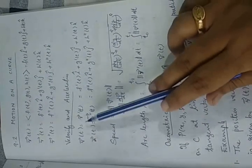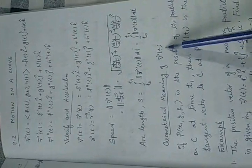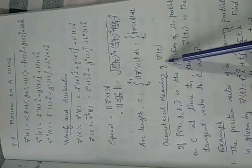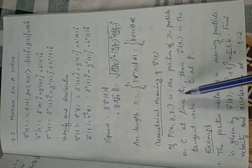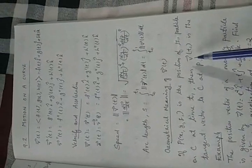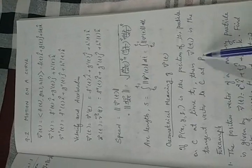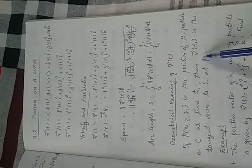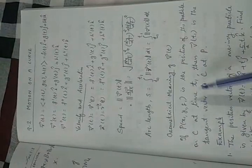Since V(t) = R'(t), the geometric meaning of the velocity vector V(t) is that it is tangent to the curve C at some point. If P(x₁, y₁, z₁) is the position of the particle on curve C at time t₁, then the velocity vector at time t₁ is the tangent vector to curve C at point P.